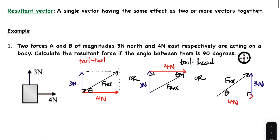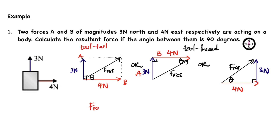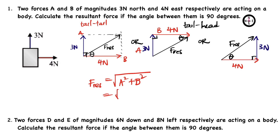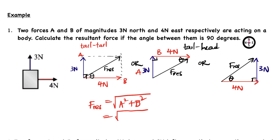Now let's go to the calculation. To calculate the resultant we use the theorem of Pythagoras. We have side A and side B. The theorem of Pythagoras gives us: F_res = √(A² + B²) = √(3² + 4²), and the answer is 5 Newtons. But when calculating the resultant, you must also calculate the direction.